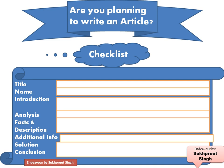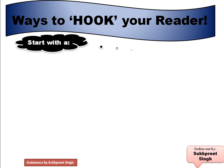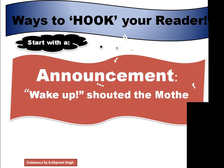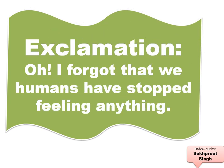When writing an article, a student should be able to attract the attention of the reader. There are ways to hook your reader. Article writing can start with an announcement like 'Wake up, shout it, the mother earth!' It can also start with an exclamation like 'Oh, I forgot that we humans have stopped feeling anything.' When we start with an announcement or exclamation, it attracts the attention of the reader and they wish to read the article thoroughly.